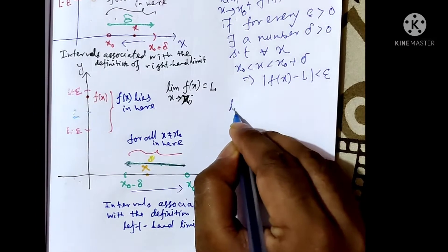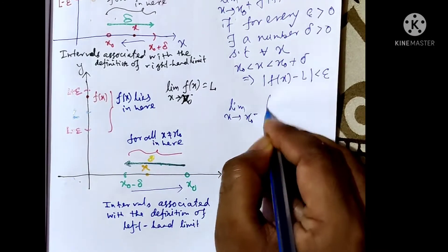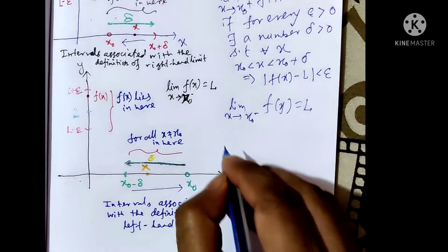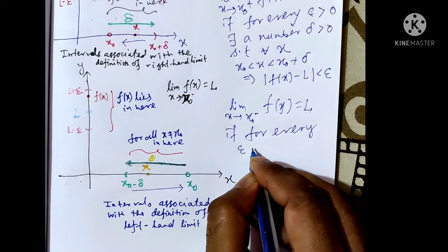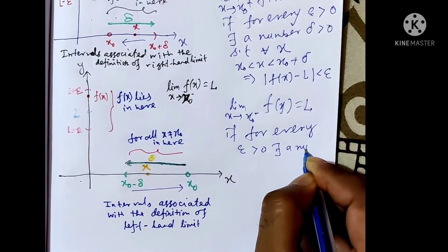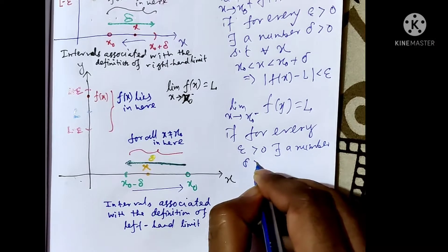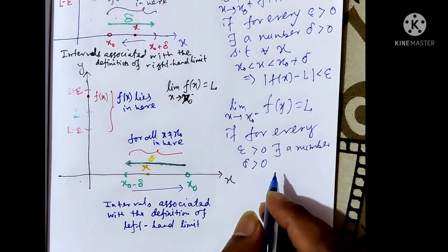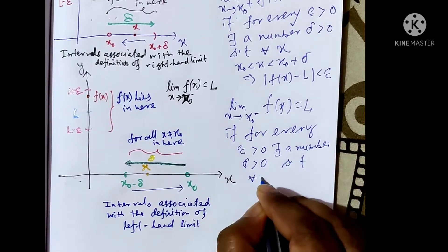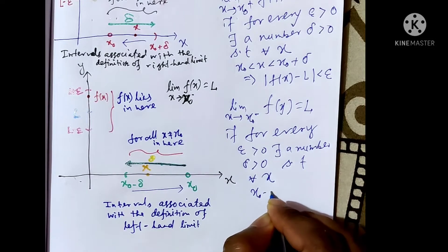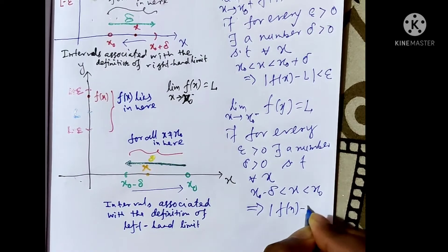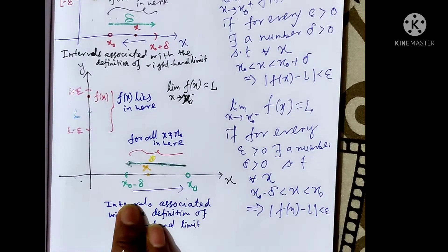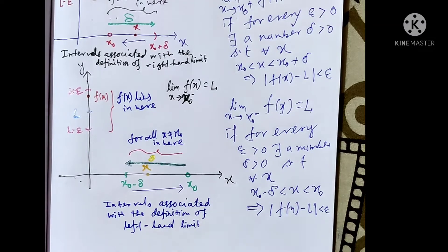Mathematically, we say that the limit as x tends to x₀⁻ of f(x) equals l if for every epsilon greater than 0, there exists a number delta greater than 0 (delta depending on epsilon) such that for all x, x₀ minus delta less than x less than x₀ implies |f(x) − l| less than epsilon. This is the picture and this is the mathematical definition. In this case, we say that f(x) has a left limit.